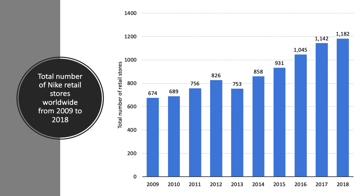There are lots of ways you can track globalisation: trade-to-GDP ratios, the value of foreign direct investment against a country's national income, the number of overseas visitors around the world economy. A nice little measure is the number of Nike retail stores worldwide, which continues to grow — now well over 1,000 Nike stores across the globe.